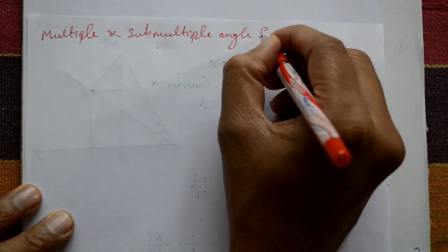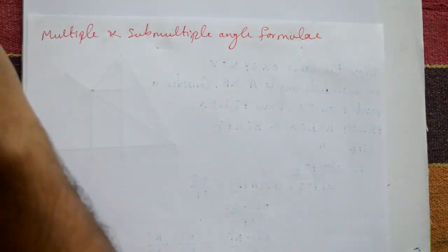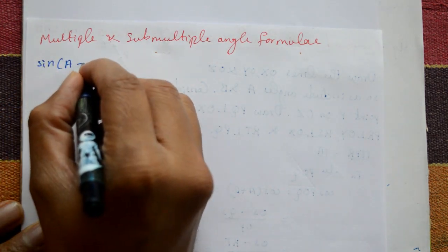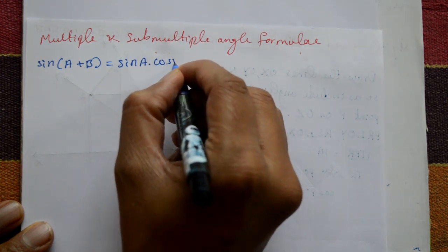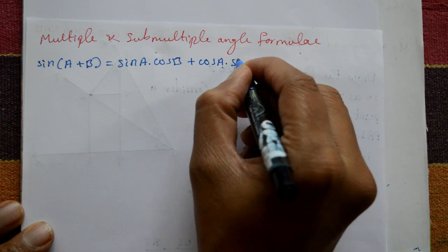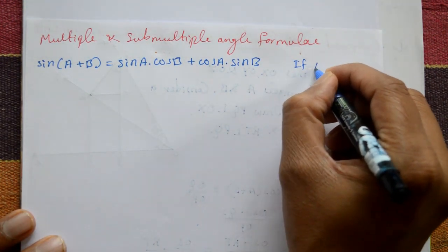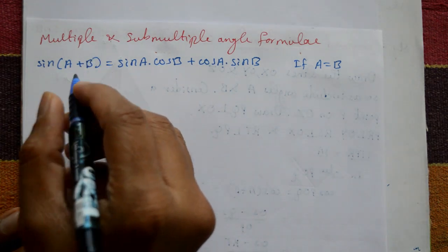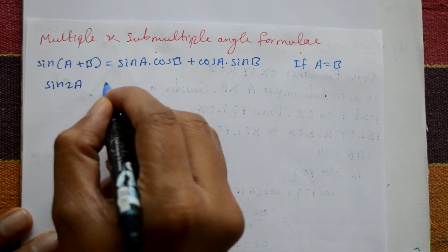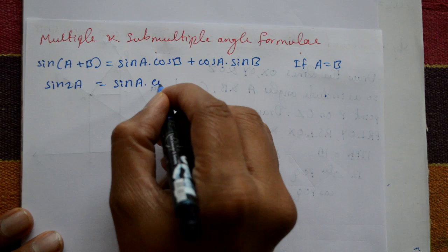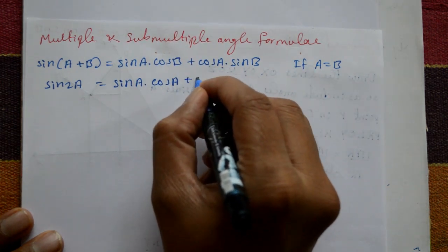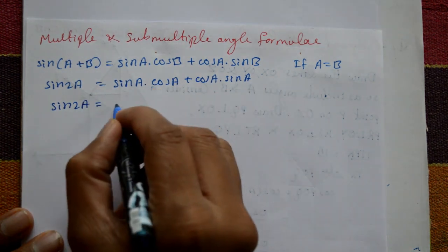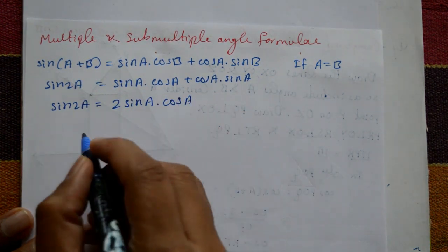For angle formulas, take the first one. We have already proved this standard formula: sin(a+b) is equal to sin a into cos b plus cos a into sin b. Now take a equal to b. sin(a+a) is sin 2a. This equals sin a into cos a plus cos a into sin a — two times the same term. So sin 2a equals 2 sin a into cos a. This is one standard formula.